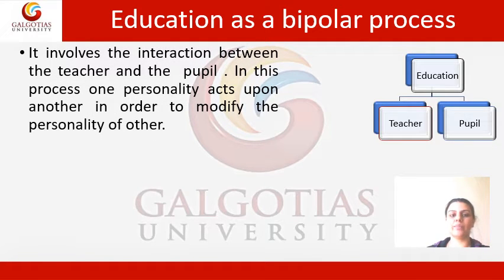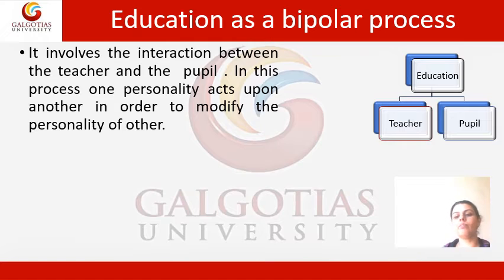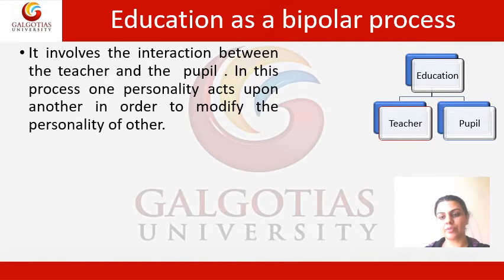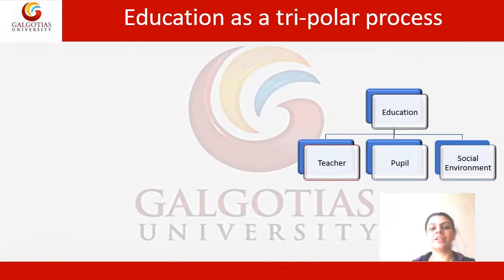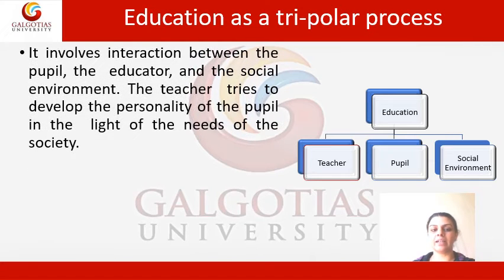In the bipolar process, one personality acts upon another in order to modify the personality of the other. The teacher was the more mature one who imparted instruction to the student. But nowadays education has been converted into a tripolar process where teacher, pupil, and social environment are connected to each other.